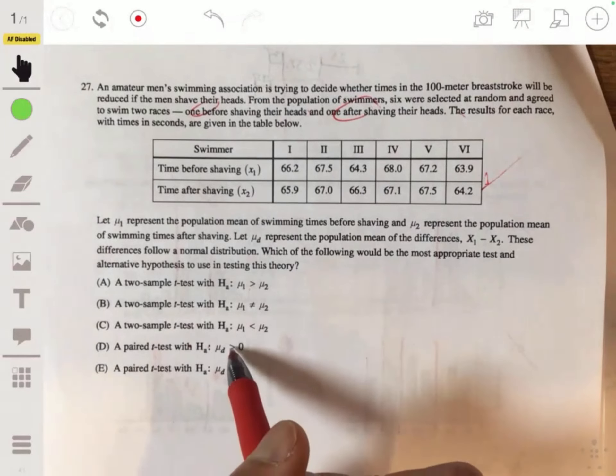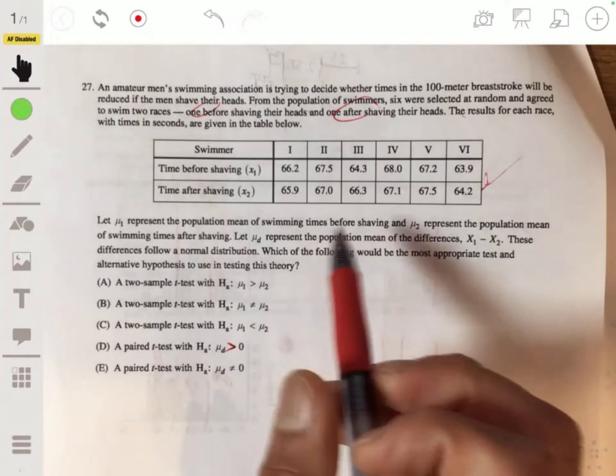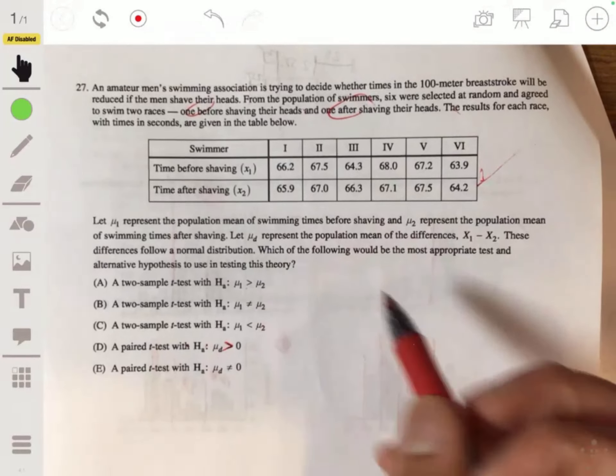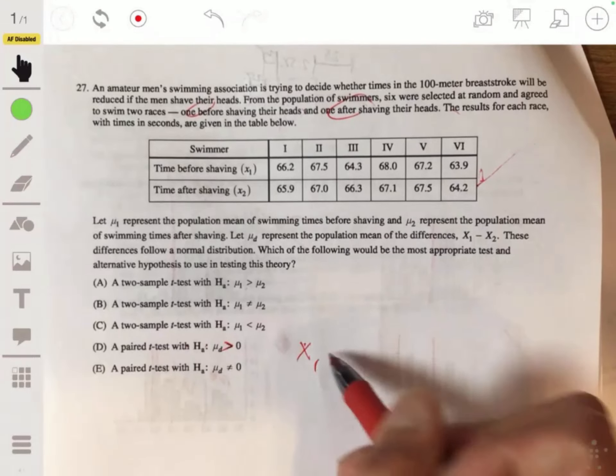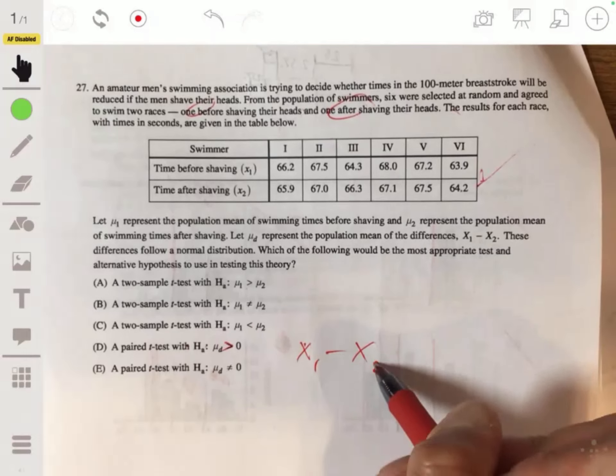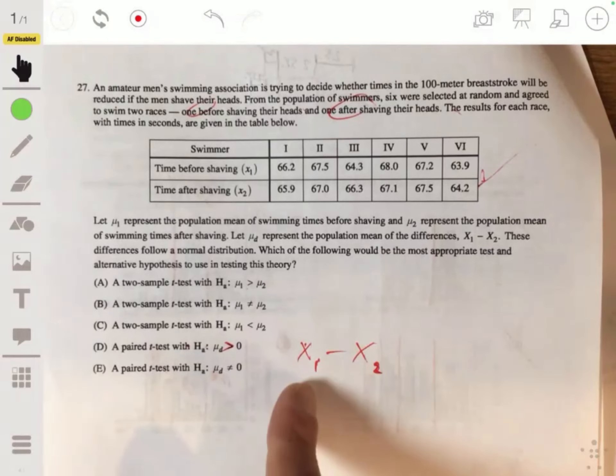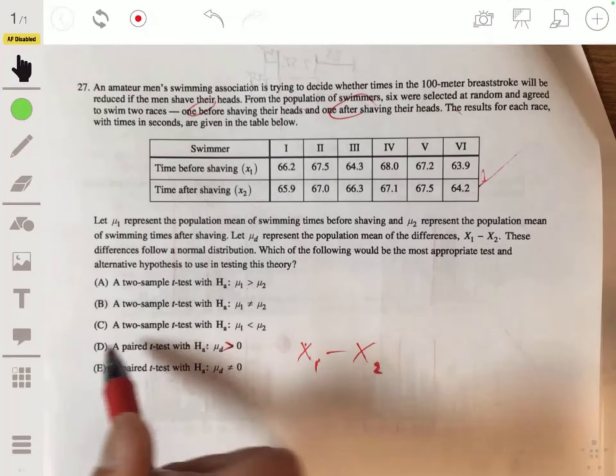You don't want to have one swimmer's time be compared with another swimmer's time because maybe one's a faster swimmer than the other one, regardless if they shave their head or anything. So paired T-test, they're in pairs. They're compared to themselves. That means the difference would have to be greater. We're doing time one minus time two, and we want this one to be greater. So the answer would be D.